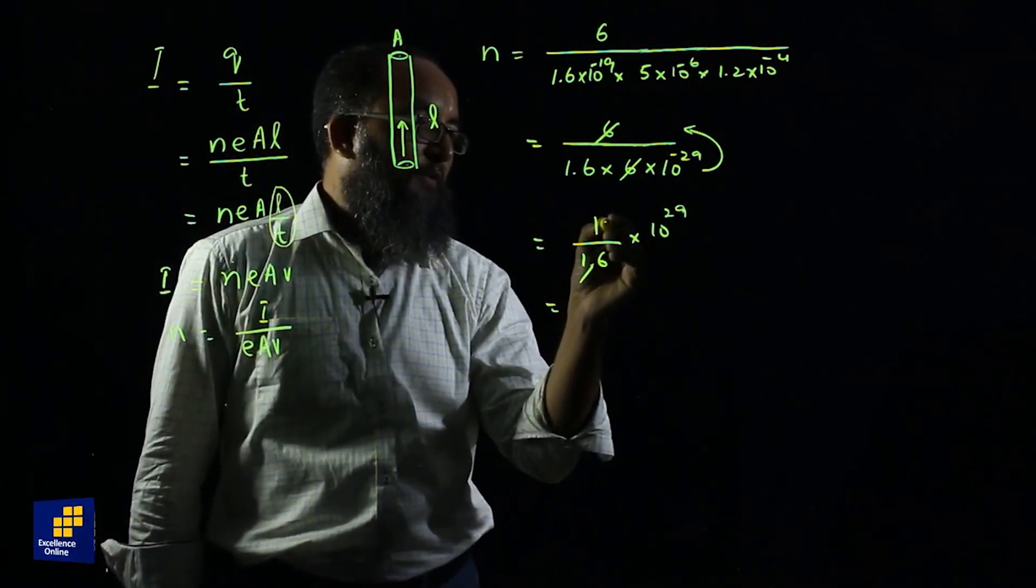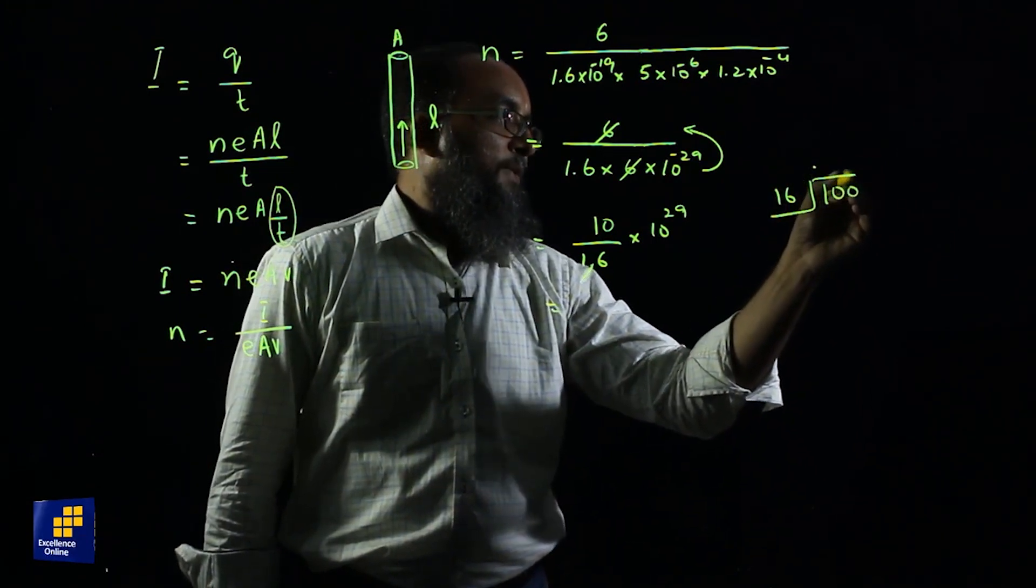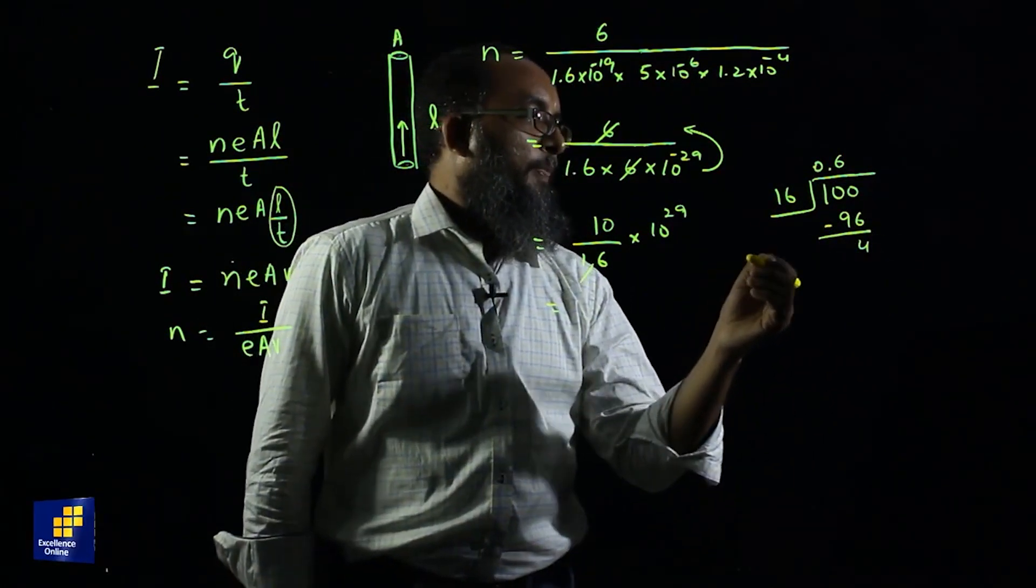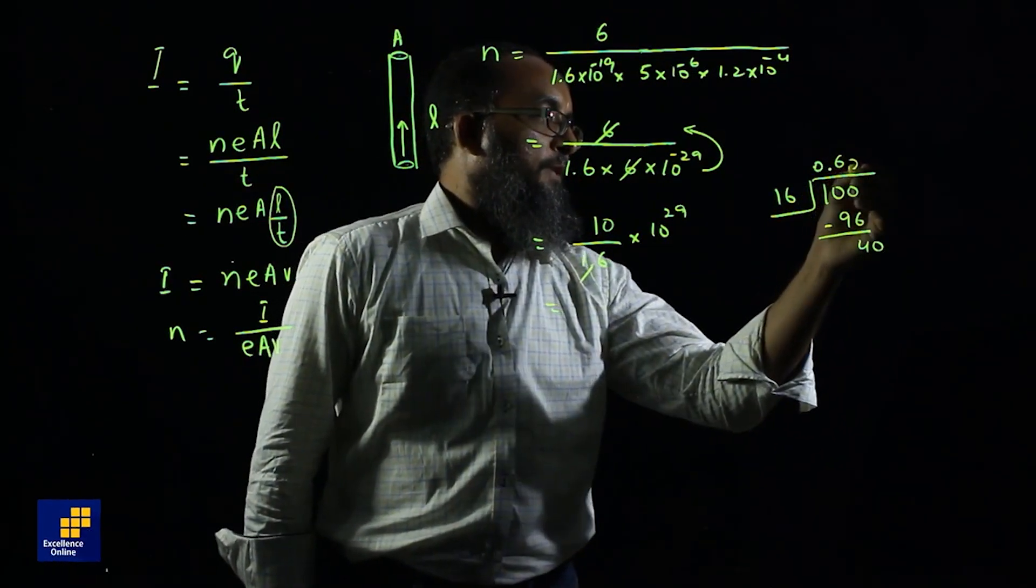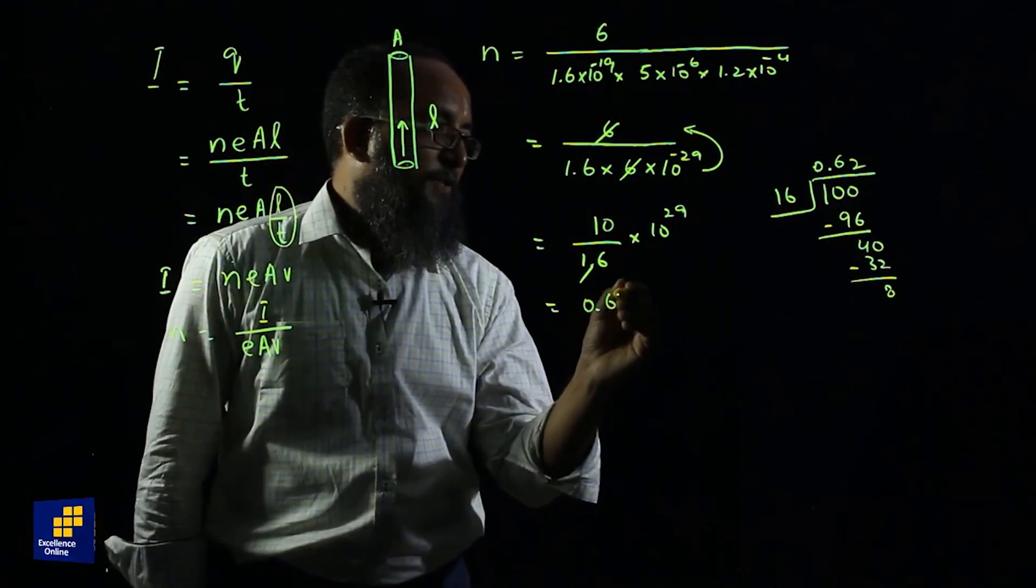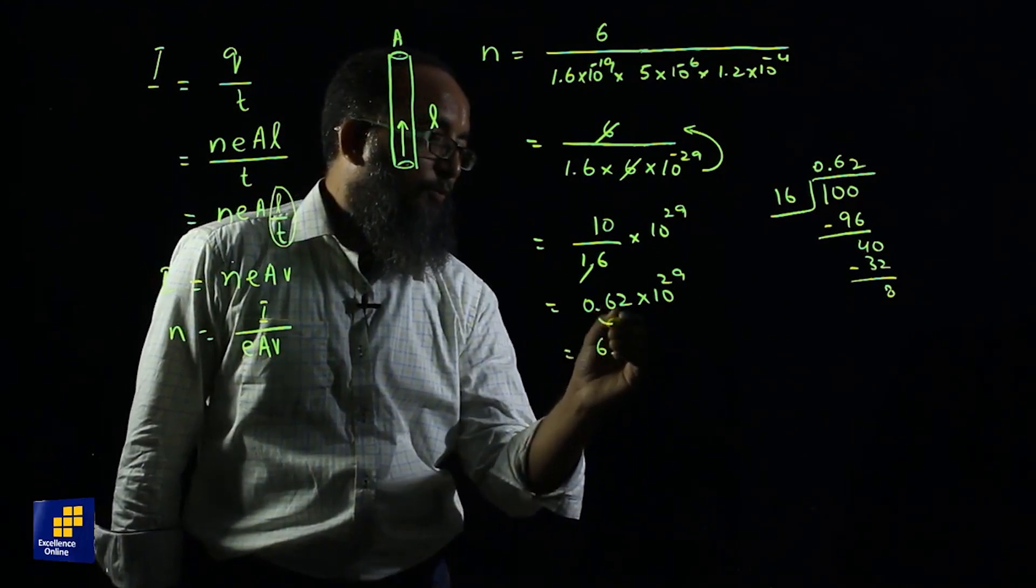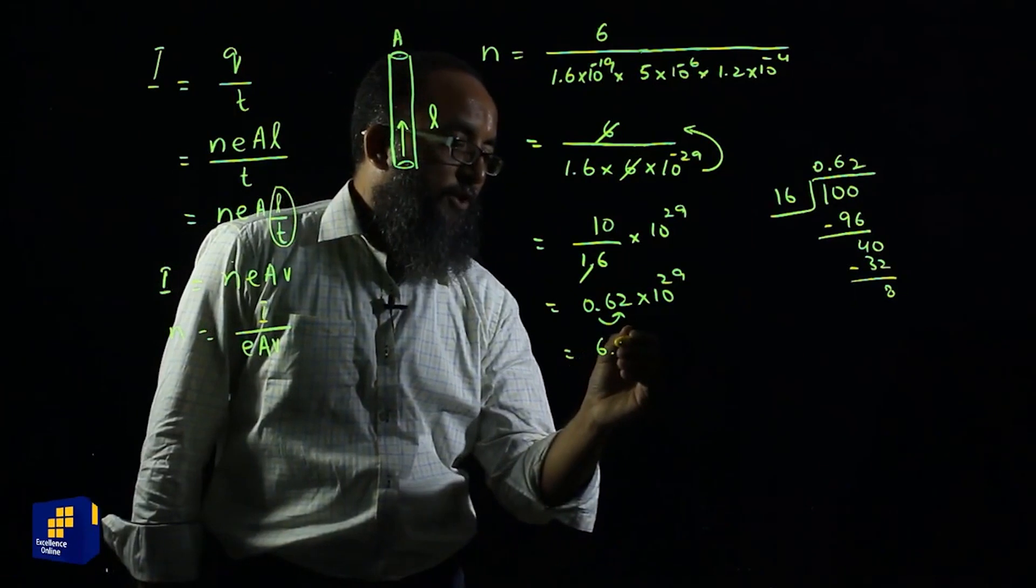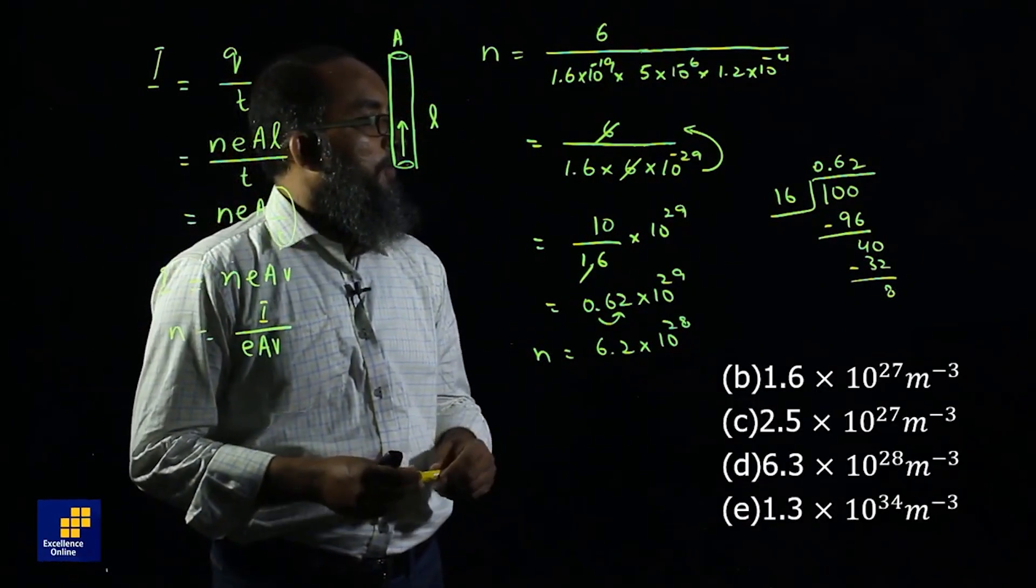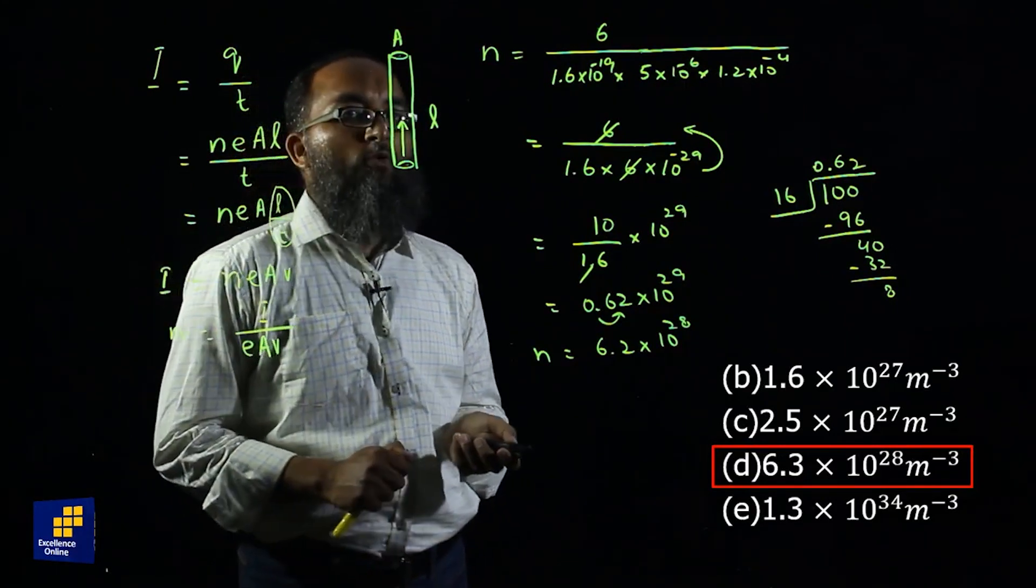Now if I remove the decimal point from here we get 10 divided by 16. Put a point here in place of zero. 16 times 6 is 96, we get 4. After the subtraction we have a point here so we can place a 0. 16 times 2 is 32, now we get 8. The answer will continue but we get 0.62 exponential 29. All the options are in scientific notation so we will have 6.2. I move the decimal point rightward one digit, so we have 6.2 exponential 28 electrons per meter cube.